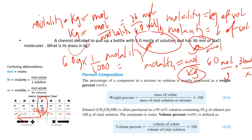Percent composition. The percentage of a component in a mixture or solution is usually expressed as a weight percentage. Weight percent equals mass of solute divided by mass of total solution or mixture, times 100. The same applies to volume percent — instead of weight, it's the volume of solute divided by volume of total solution, times 100.